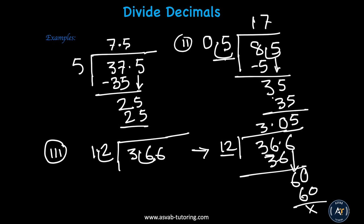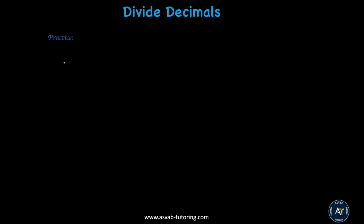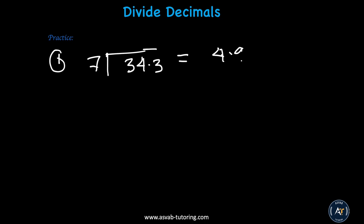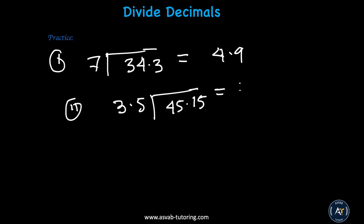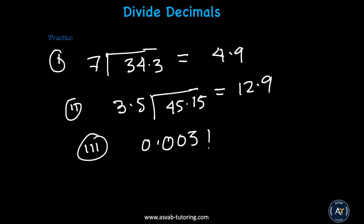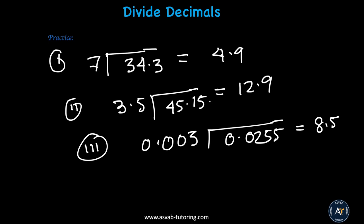Let me give you a few problems to try by yourself. Number 1: 34.3 divided by 7 — the answer is 4.9. Number 2: 45.15 divided by 3.5 — the answer is 12.9. Number 3: 0.0255 divided by 0.003 — the answer is 8.5. Try by yourself. If you don't know how to get it, look at the previous examples.